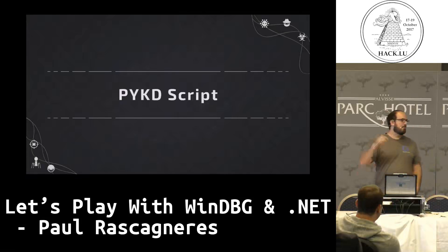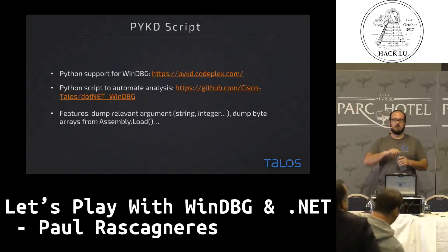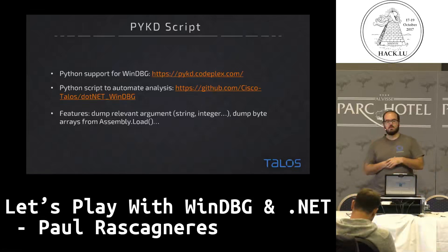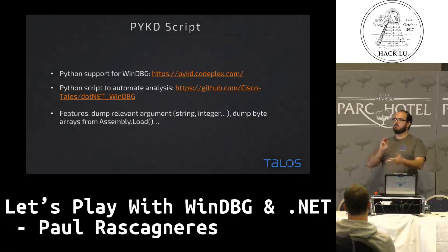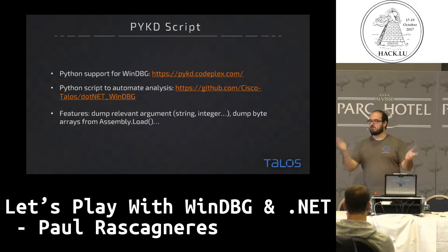All the demos are really manual — you must put breakpoints, go, stop, extract, etc. So we created a small Python script. You need the Python extension — by default WinDBG does not support Python, so you need to add a Python extension called pykd. It's open source, and you have pre-compiled binaries, so it's really easy to use. You must take our script, which is available on Cisco Talos on GitHub. The purpose of the script: you put some configuration — I want to monitor download file, I want to monitor process create, I want to monitor assembly load. For each function you set, if it's a start-process it will log every string and integer. If it's assembly load, it will dump to file every byte array passed as an argument. The output will be in JSON if you need to parse it.